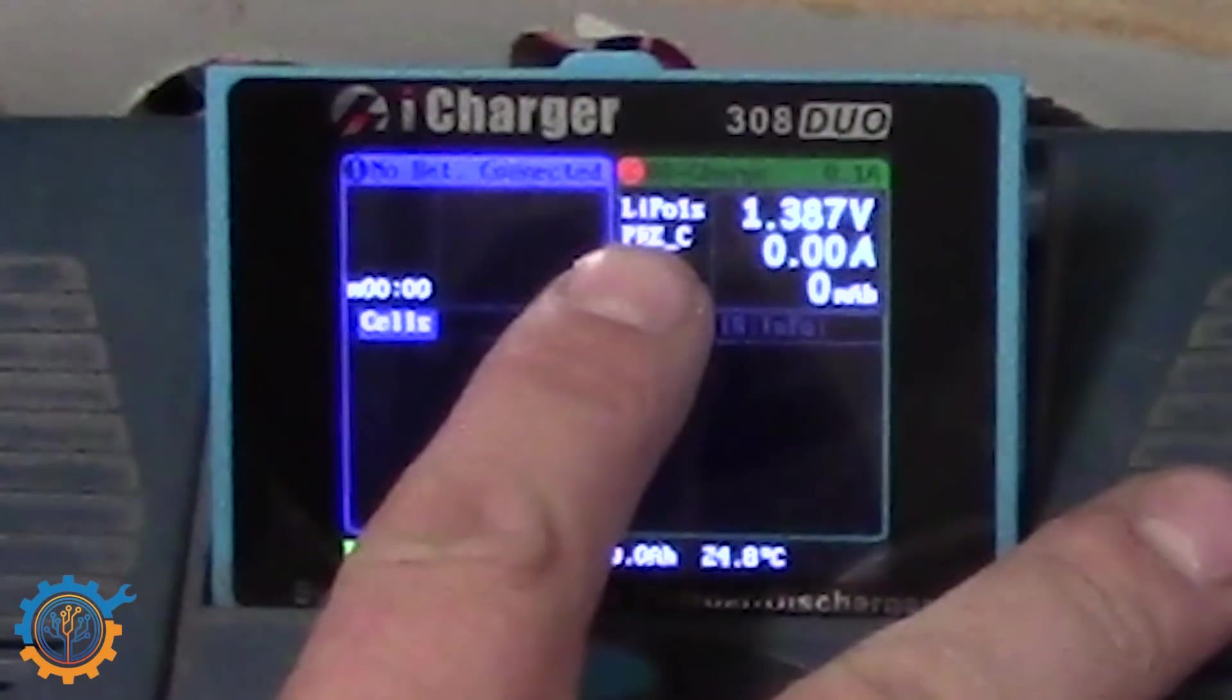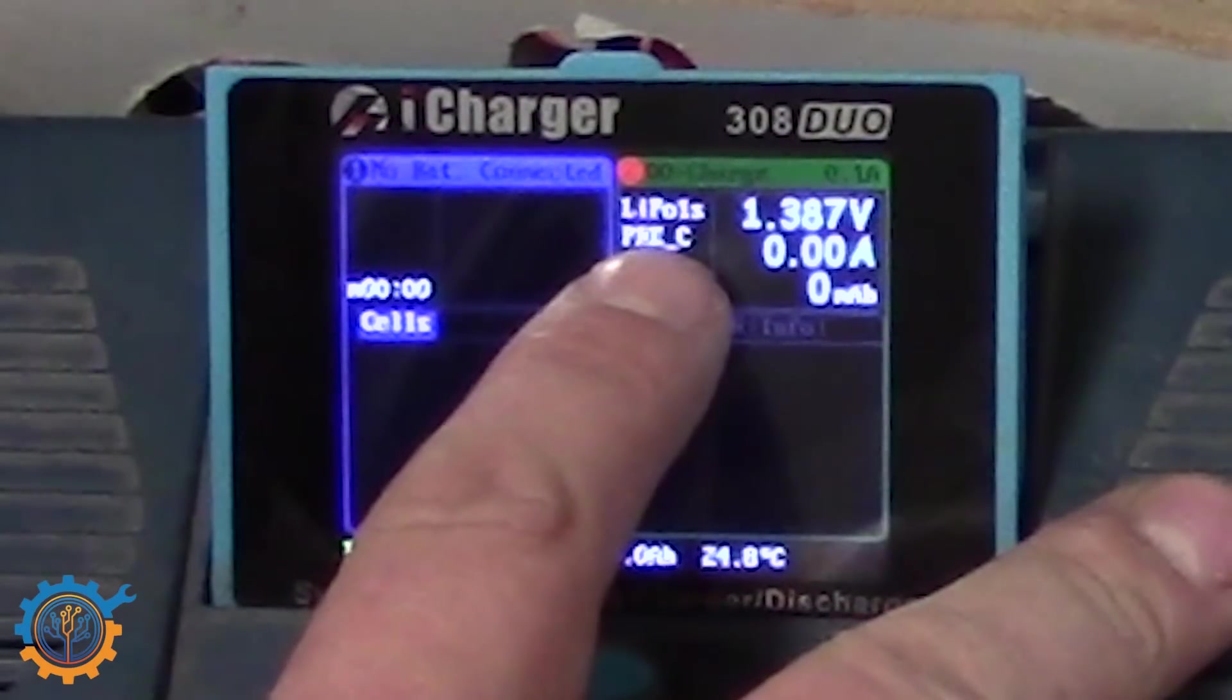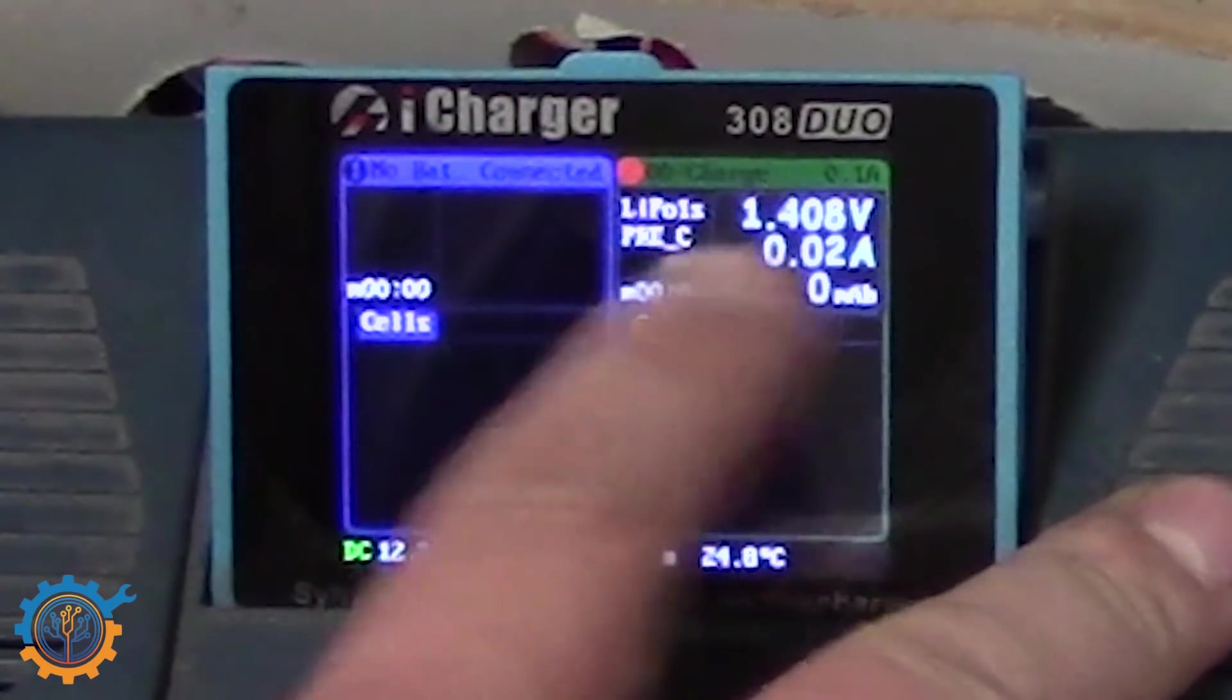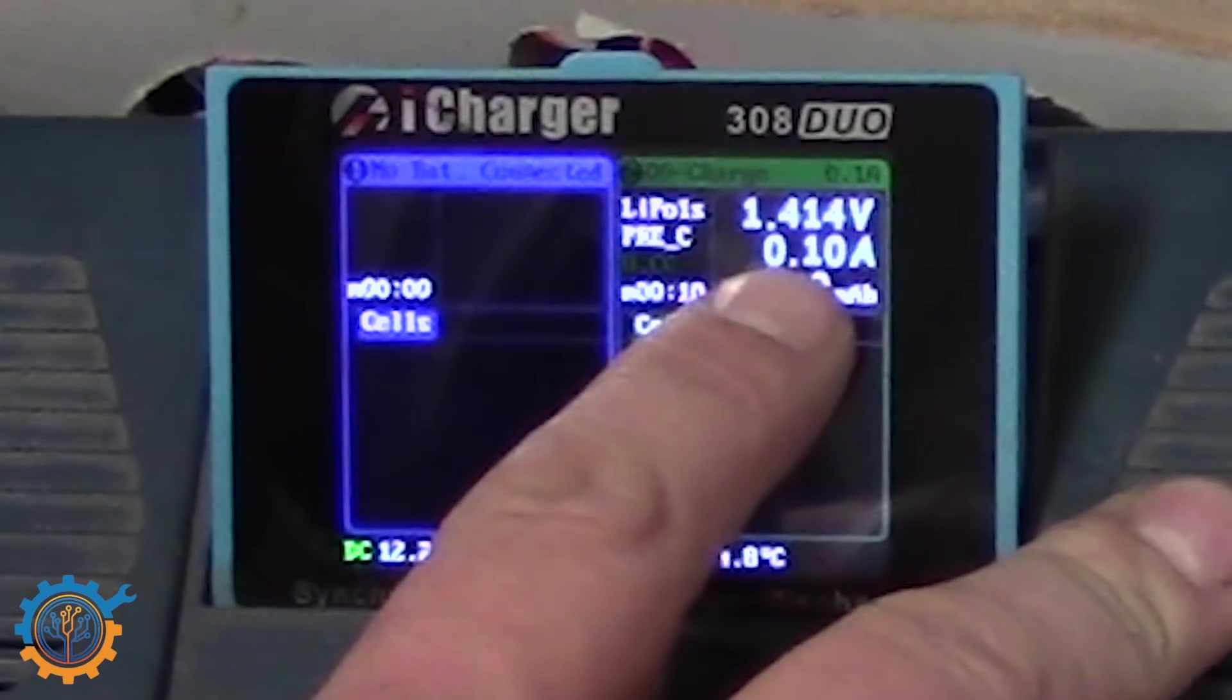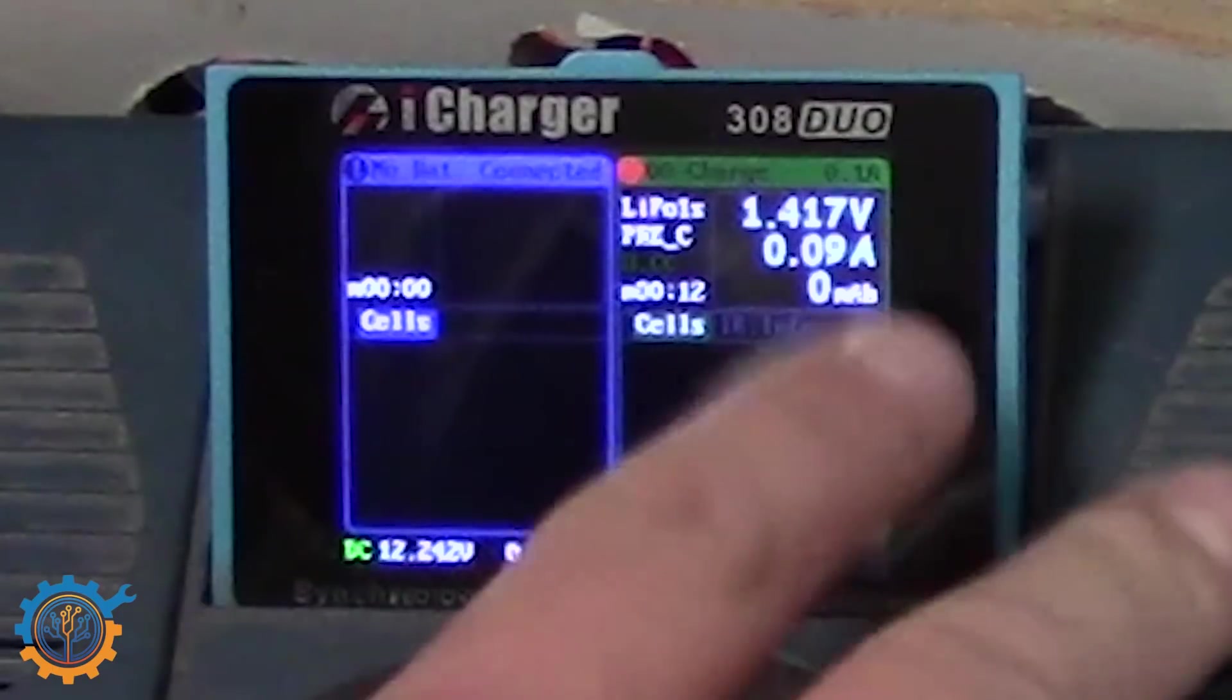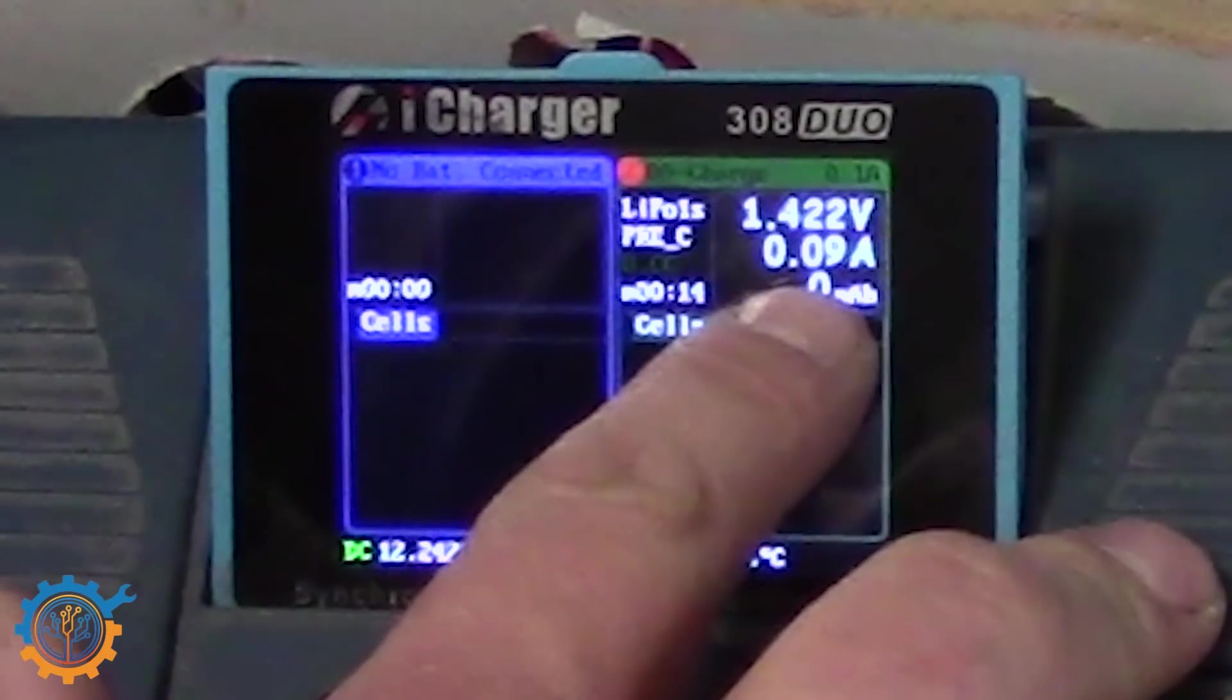If you see here in the display, it does say Pre-C. That means that it has detected that the voltage is low. So what it is doing is running a pre-charge. And the pre-charge on this charger is set to 100mA.